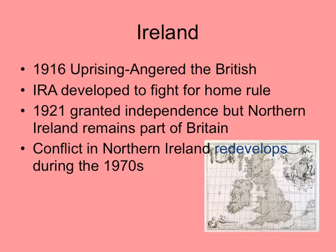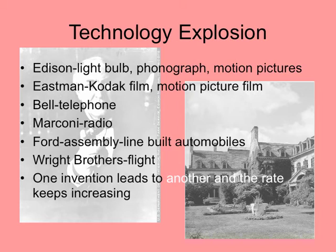The conflict in Northern Ireland redevelops during the 1970s. A huge part of that is because the Catholic population is growing and it's becoming more balanced, so you don't quite have the Protestants controlling everything anymore — the Catholics want an equal voice.